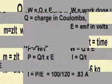As an example, calculate the current in a 100 watt light bulb connected across a source of 120 volts. Power is equal to I times E. Therefore, I is equal to P divided by E, or 100 divided by 120, which equals 0.83 amps.